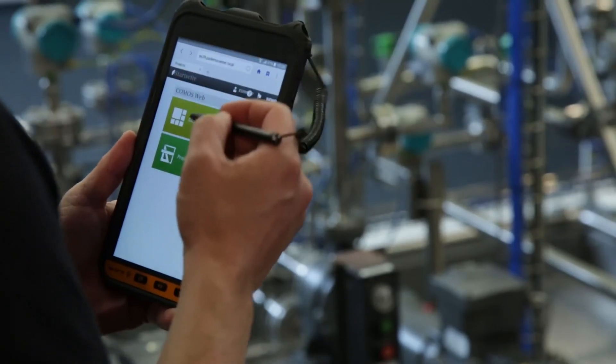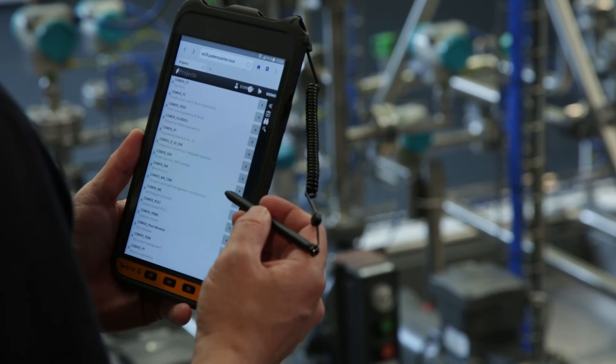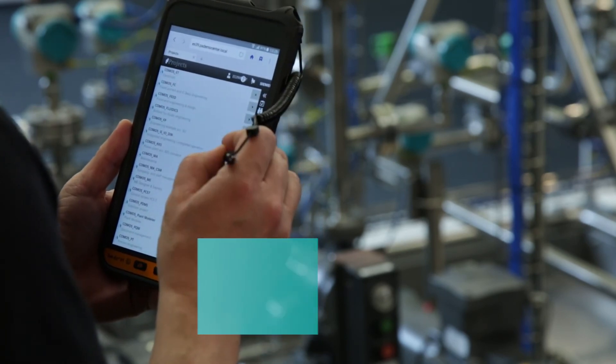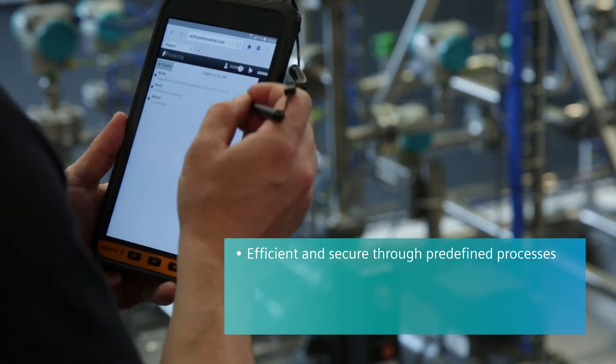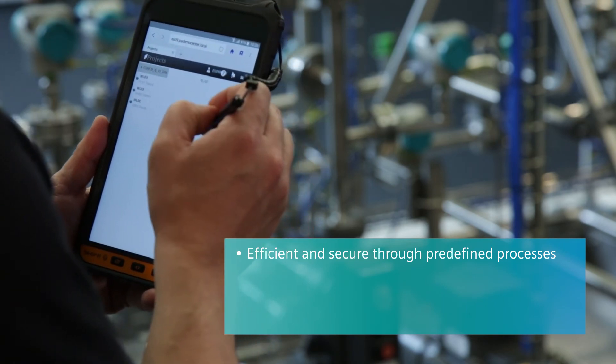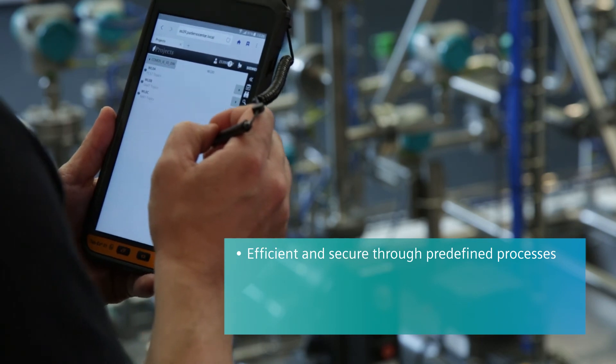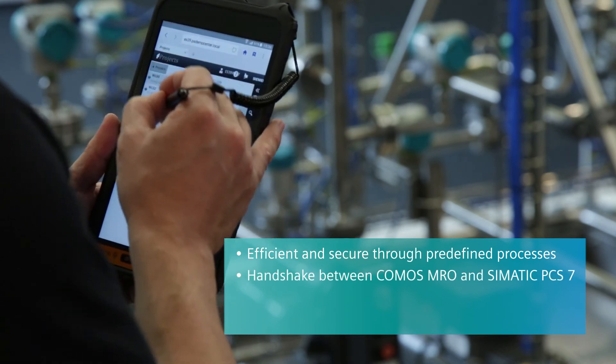The example demonstrates an efficient maintenance and repair routine throughout all phases. The phases range from order generation in SIMATIC PCS7 right up to completion of the maintenance order, including documentation in COMOS MRO.